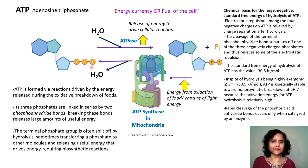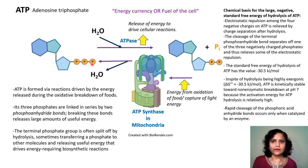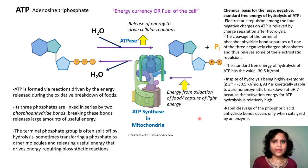The terminal phosphate group of ATP is often split off by hydrolysis, sometimes transferring this phosphate to other molecules and releasing useful energy that drives energy-requiring biosynthetic reactions. Energy release from this hydrolysis occurs because cleavage of the bond separates off one of the negatively charged phosphates and relieves some of the electrostatic repulsion in the molecule.